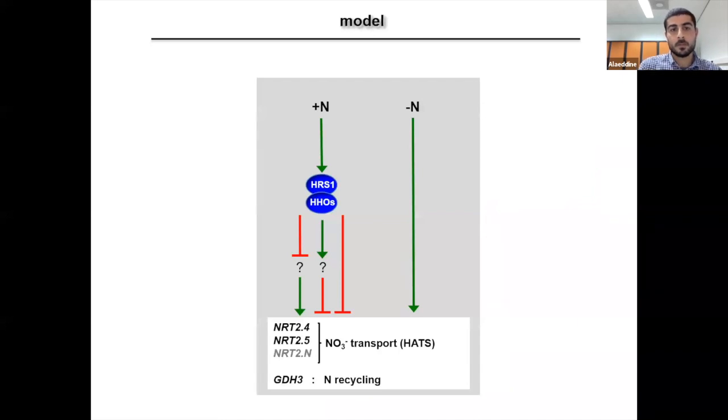Here, as you can see, the quadruple mutants have bigger rosettes compared to wild type, which is correlated with higher nitrate uptake, which is more than two times higher than in the wild type. So to summarize, we showed that N starvation induces the expression of nitrogen starvation markers, such as NRT2-4, NRT2-5, and GDH3. And when we apply nitrate, HHO transcription factors will be very rapidly induced in order to repress this response. So the remaining question here is whether this regulation is direct or indirect.